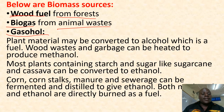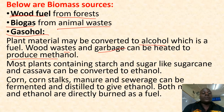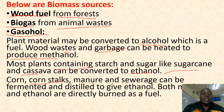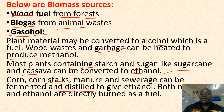How do we get fuel from plants? Plant material may be converted into alcohol, which is a fuel. Wood wastes and garbage can be heated to produce methane. Most plants containing starch and sugar, like sugar cane and cassava, can be converted into ethanol. Corn and corn stalks, manure, and sewage can be fermented and distilled to give ethanol, which can all directly burn as fuel.